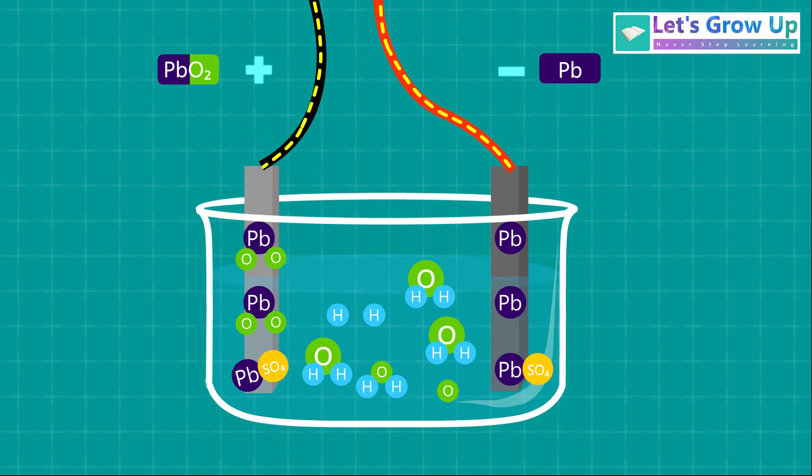When power is supplied to the battery, the process reverses. At the negative plate, which now acts as the cathode during charging, the incoming electrical energy forces electrons into this electrode.